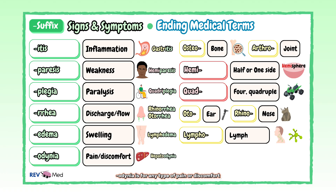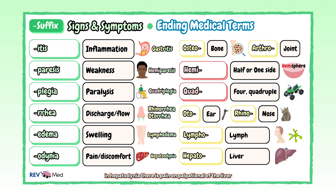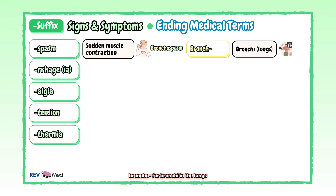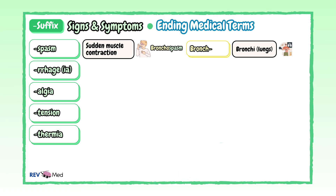"-Odynia" is for any type of pain or discomfort. For example, in hepatodynia there is pain on palpation of the liver. "-Spasm" is a sudden muscle contraction. An example is a bronchospasm, which uses the root word "broncho" for bronchi in the lungs. Bronchospasm is a contraction of the muscular coat of the bronchial tubes. You can also think of a muscle spasm — a cramp — what we call a charley horse.